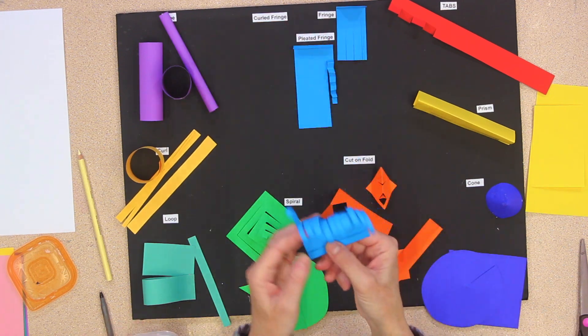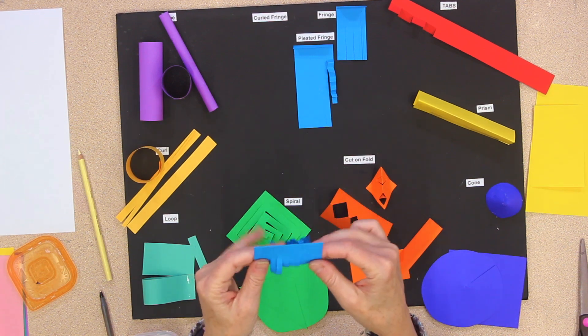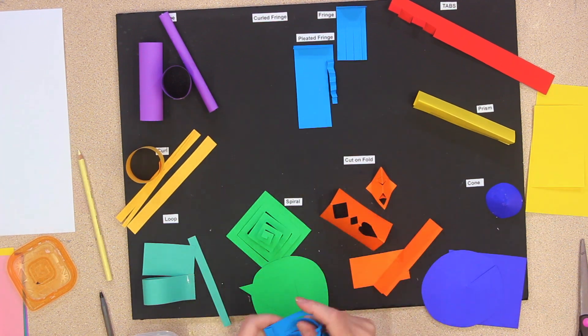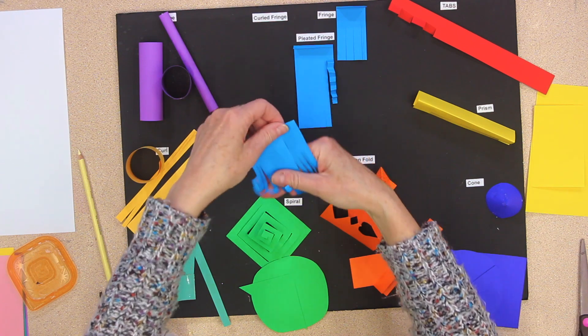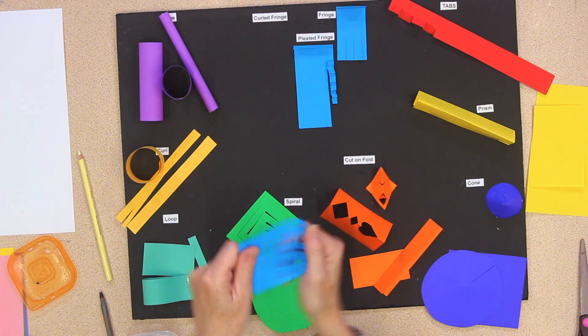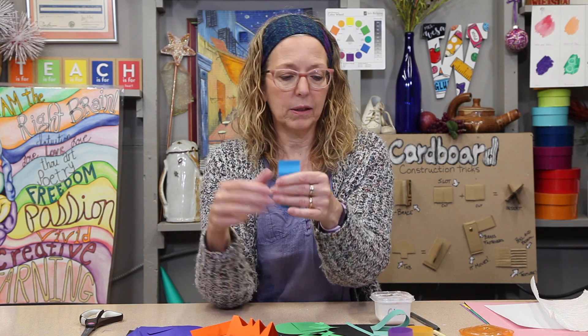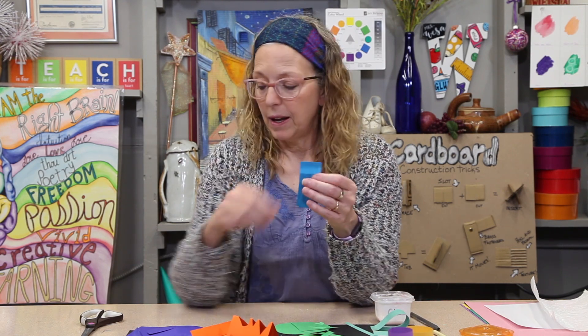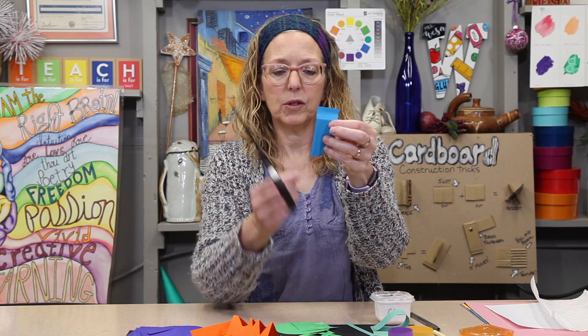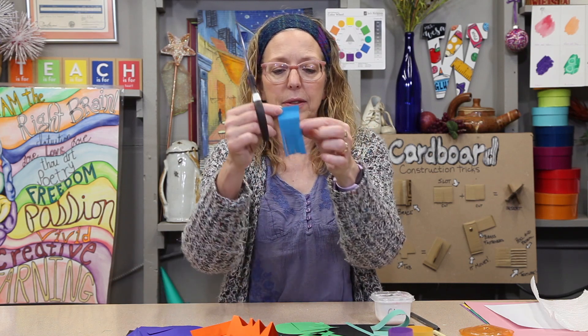Now, the next one is curled fringe. All I've done is I've taken a piece of paper, just a rectangle. Here's a rectangle, just like this, just like I had before. And I started to cut. So these are really skinny, and these are really fat.